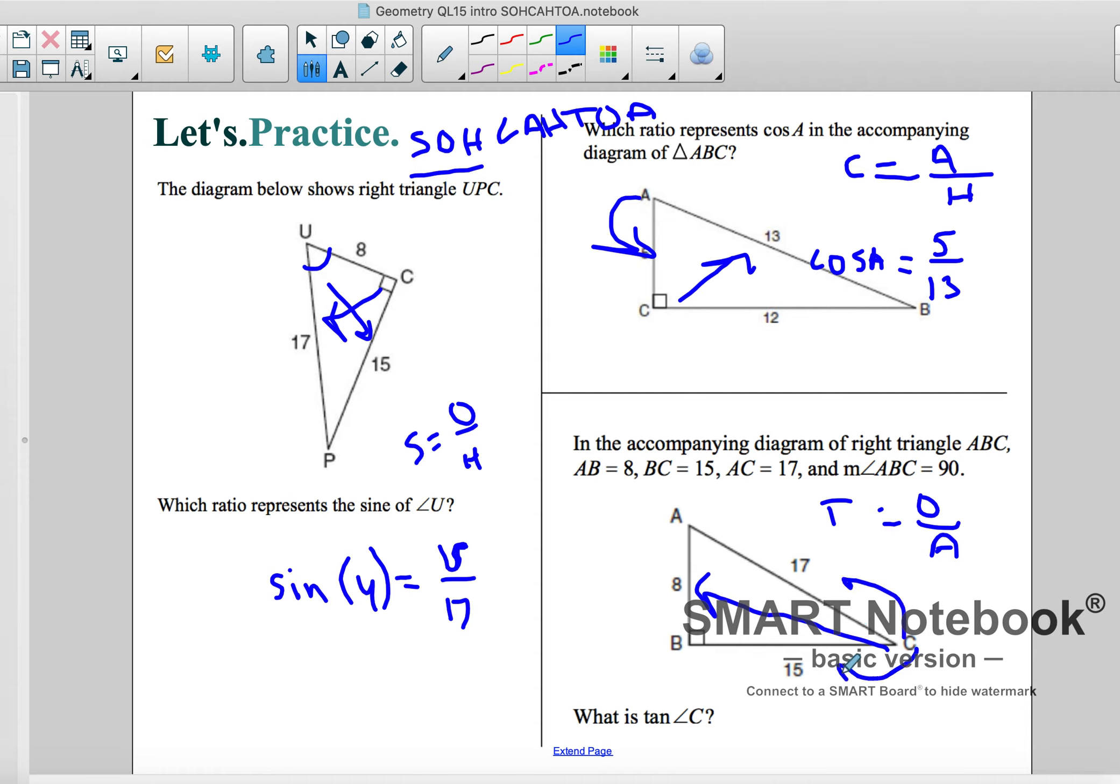17 is our hypotenuse. And tangent, I'll just put it down here. Tangent of C is equal to 8 over 15. And that's pretty much it. All we're doing today is writing ratios.